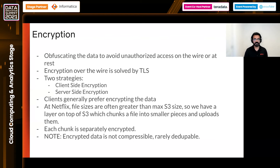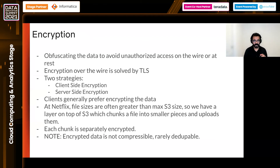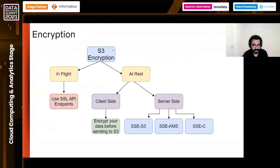Enterprises such as Netflix and Box generally prefer client-side encryption, where they control the encryption keys and encrypt content before sending it to cloud. At Netflix, some file sizes are greater than the maximum supported size on cloud providers, so we have a layer on top of S3 that chunks the file into smaller pieces, and each chunk is separately encrypted with a new encryption key. Importantly, once you encrypt the data, you cannot apply deduplication or compression because encrypted content is not compressible and very rarely deduplicable. S3 encryption provides in-flight encryption using SSL API endpoints, at-rest encryption, client-side or server-side options, and the ability to use a key management service with S3.